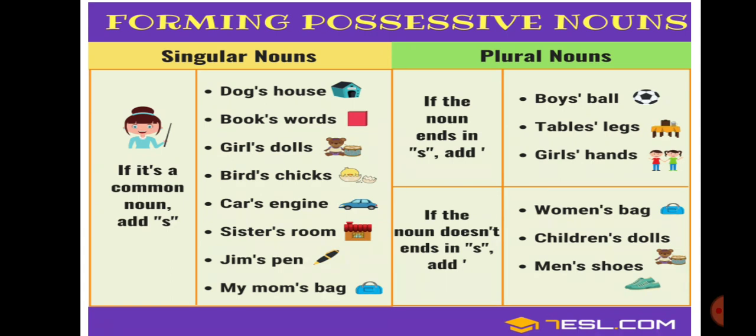With singular nouns ending in 's,' both apostrophe-s and apostrophe alone are acceptable. With plural nouns that end in 's,' we add an apostrophe after the 's.' For example: 'boys' ball,' 'tables' legs,' 'girls' hands.'